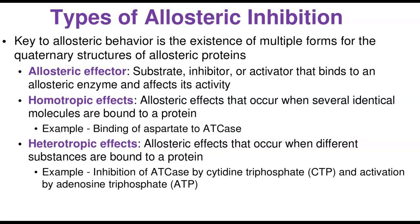There are different types of allosteric inhibition. Allosteric proteins exist in different conformational forms — these modifications occur at the quaternary structure level. The quaternary structure only exists in proteins with more than one subunit. A change in shape or conformation is only possible at the quaternary level of protein structure. An allosteric effector is any substance — inhibitor or activator — that binds to the allosteric enzyme and affects its activity by changing the conformations of the subunits.